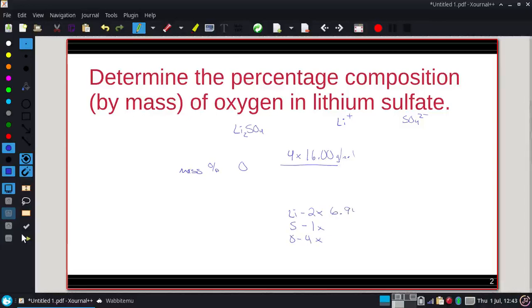So 6.941 is the mass of lithium. Sulfur is 32.06. Yeah, we'll go with that. And 16.00.